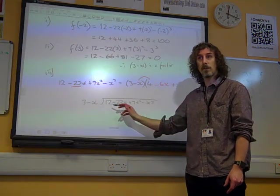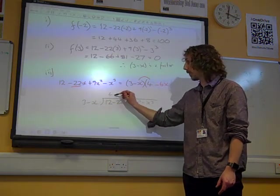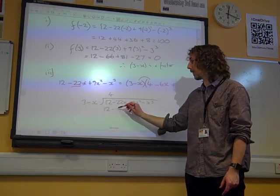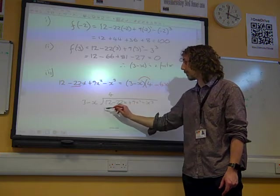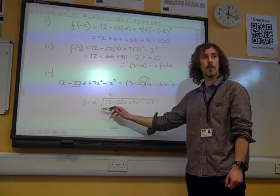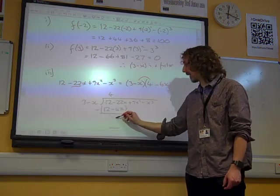What do you times 3 by to get 12? The answer's 4. So that gives us 12 minus 4x. If we subtract, we get minus 22 minus minus 4 is minus 18x.